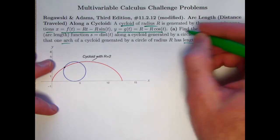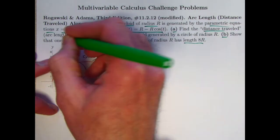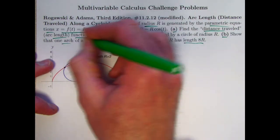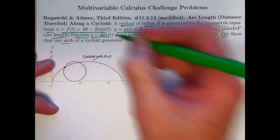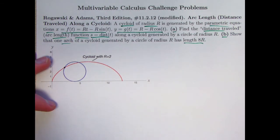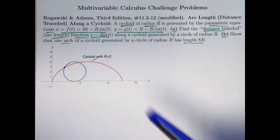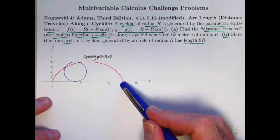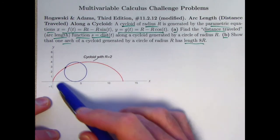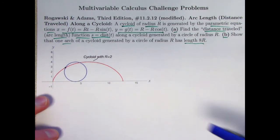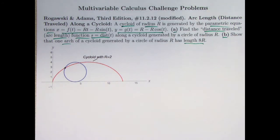I added a part a here: find the distance traveled or arc length function, s equals distance of t, along the cycloid generated by this circle of radius r. If we can do part a, then we can do part b. We'll just plug in t equals 2π to find the distance traveled or arc length along one arch of the cycloid.